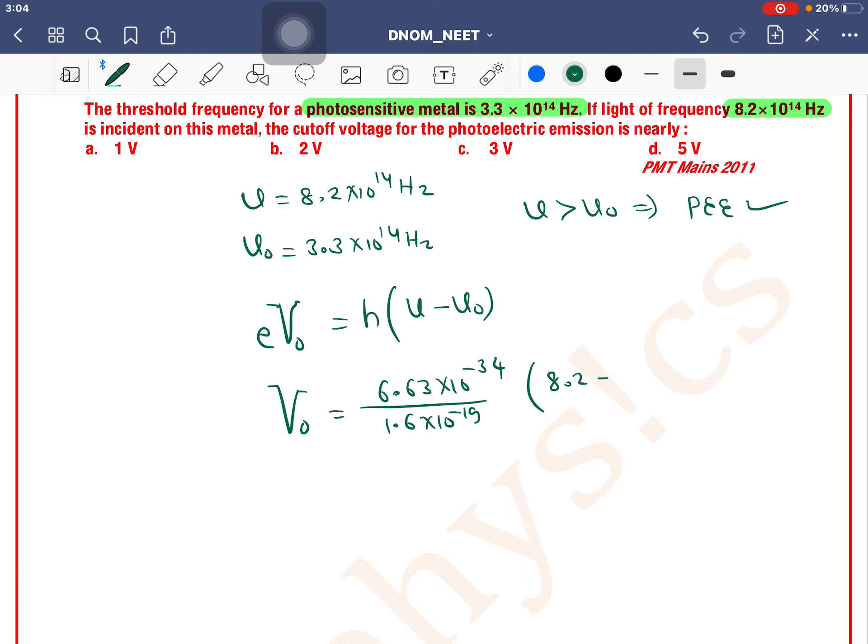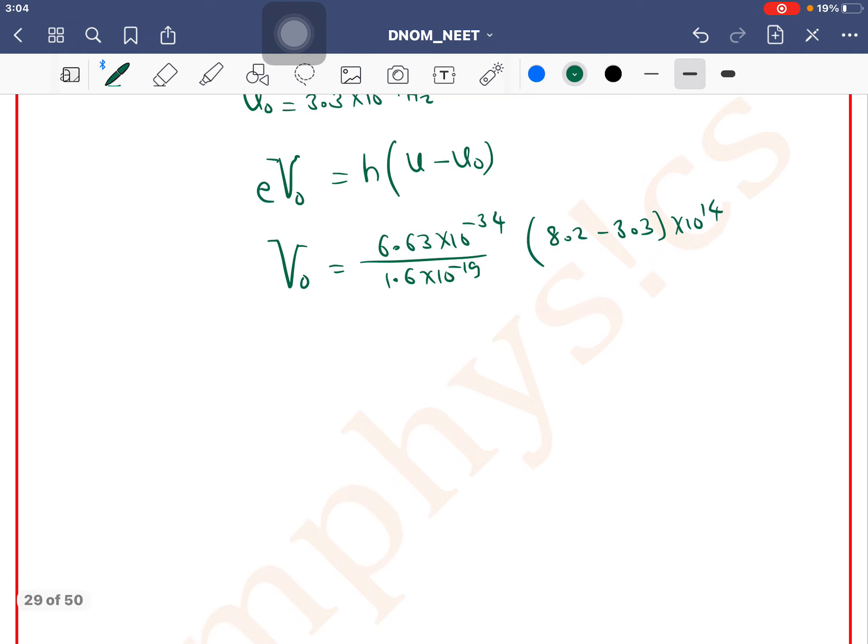ν is 8.2 and ν₀ is 3.3 × 10^14. So this can be written